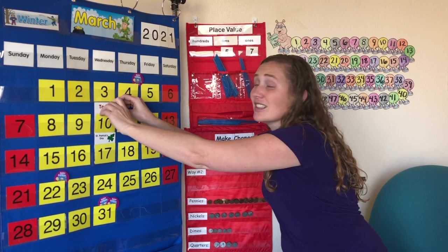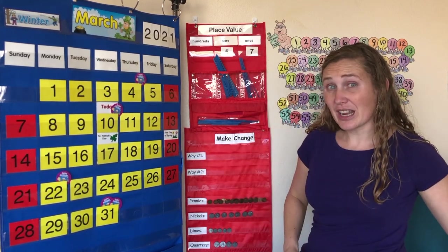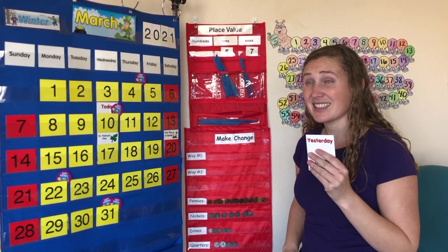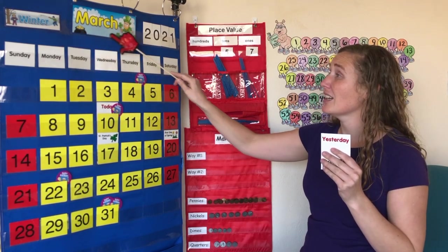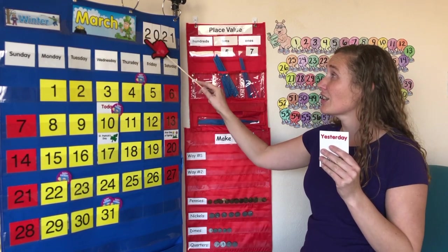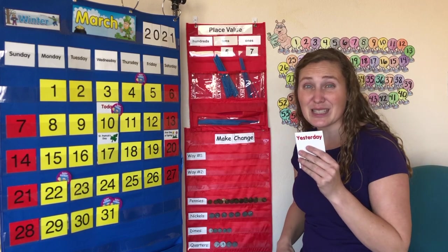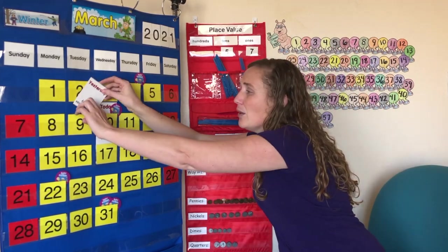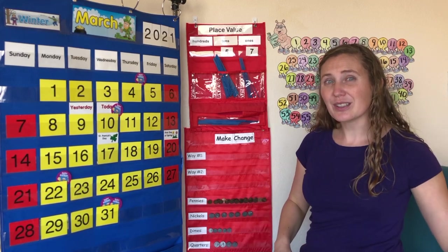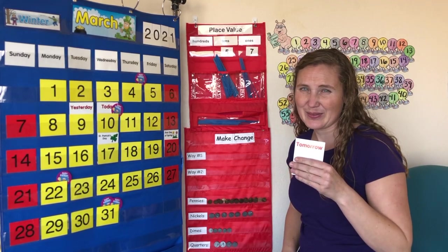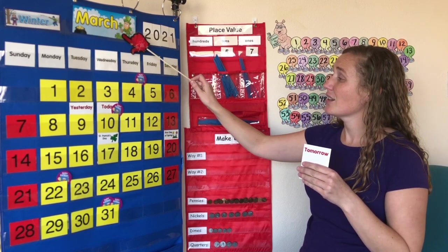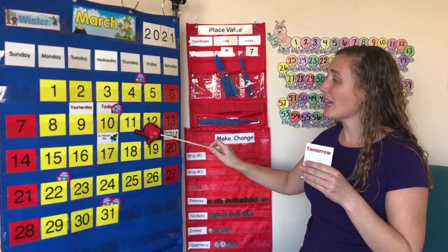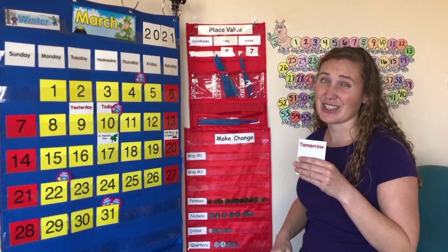Do you know what yesterday was? Yesterday was Tuesday, March 9th, 2021. What about tomorrow? What will tomorrow be? Tomorrow will be Thursday, March 11th, 2021.